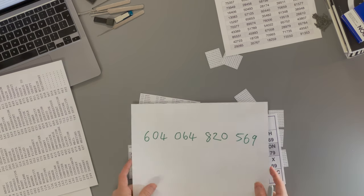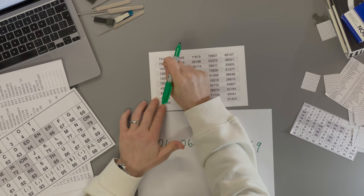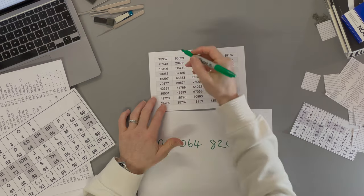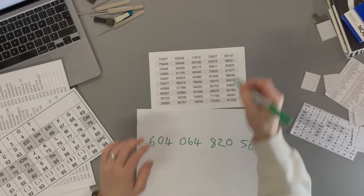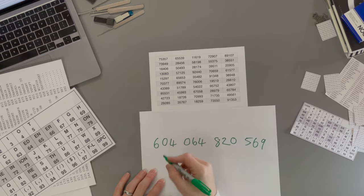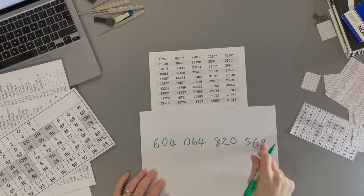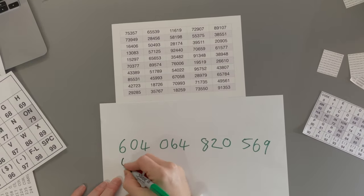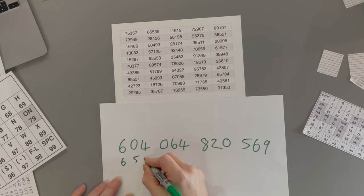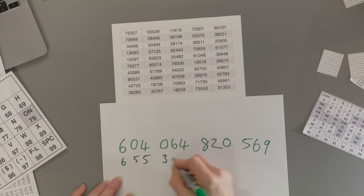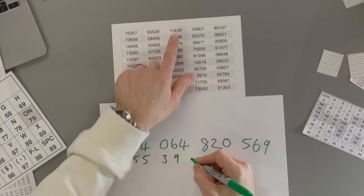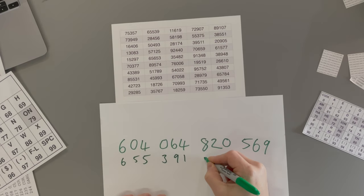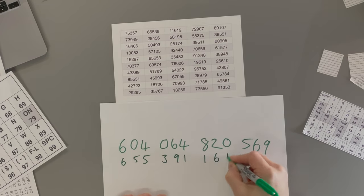So now that we have this, what do we do? We won't use the first five digits, and I'll show you why later. We'll start with the second group. You write those underneath these numbers: 6559, next group 1161.